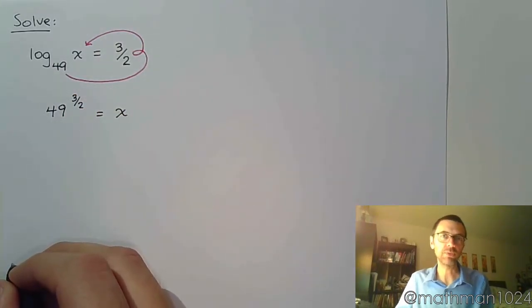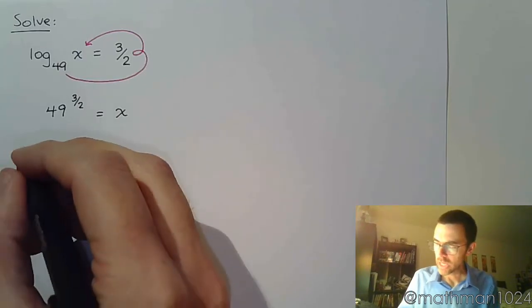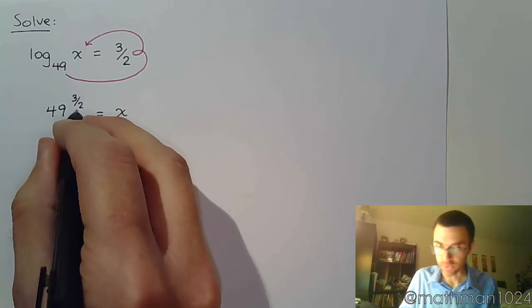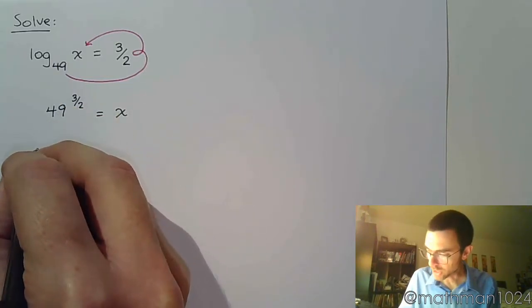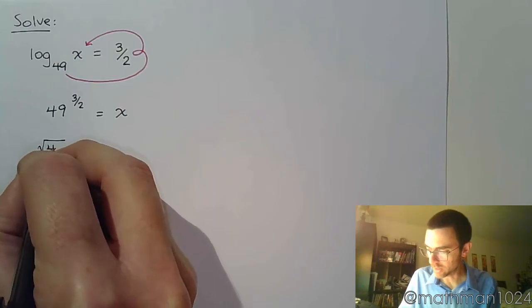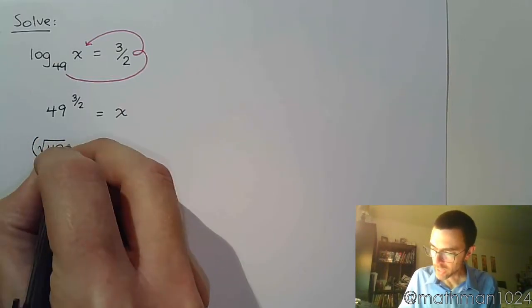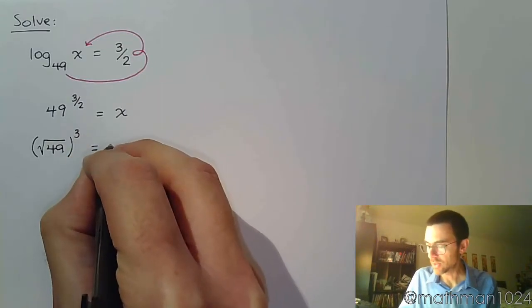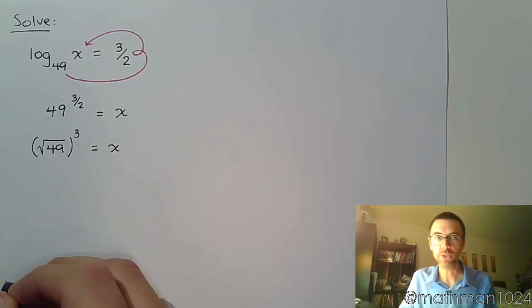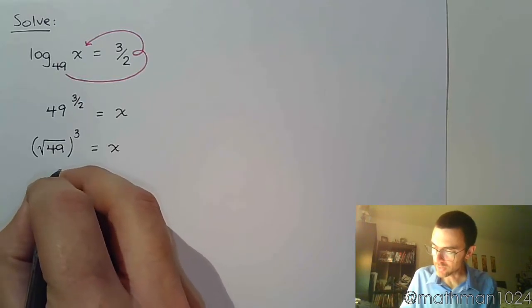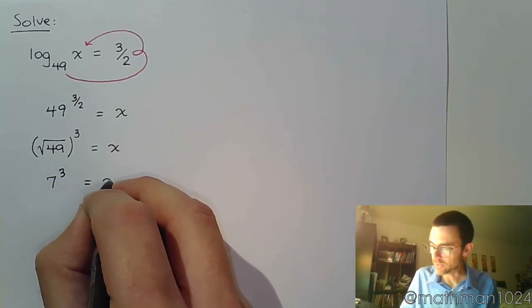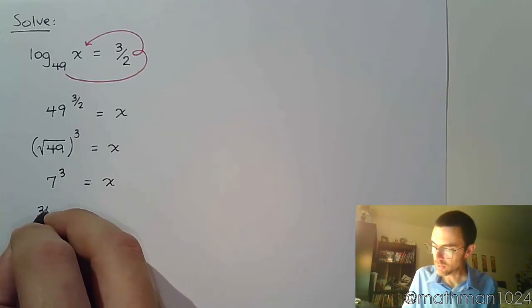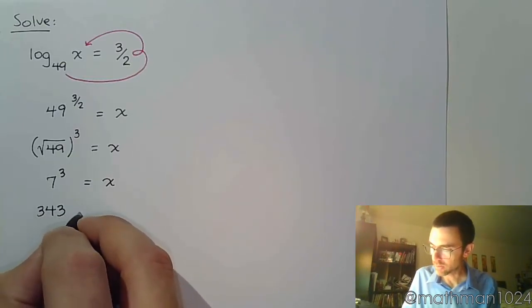Now we just have to simplify 49 to the 3 halves. Remember, the denominator of 2 means we're talking about the square root of 49, and then we've got that numerator of 3 to apply to that. So the square root of 49 is 7, and 7 to the 3rd — you can look on your power sheet and see that this is 343.